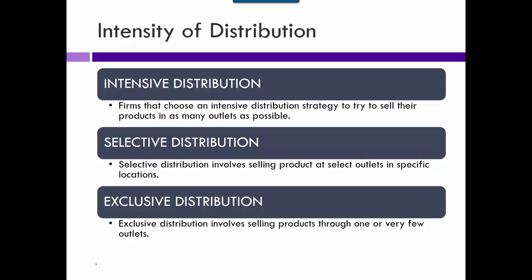The intensity of distribution: intensive distribution means getting it out there in as many stores as possible. Selective distribution means selling only at certain places — sometimes for marketing purposes you want to make it a little hard to get. Exclusive distribution — you can't buy a Rolls Royce in Hagerstown — is very exclusive and plays into the image they've built for their product. All four P's have to go together: if you're promoting a really high-quality product, you would not want intensive distribution.